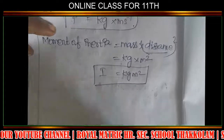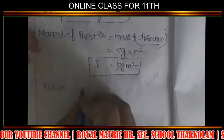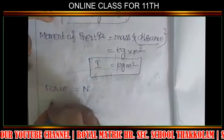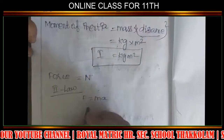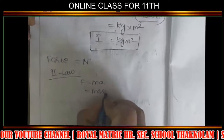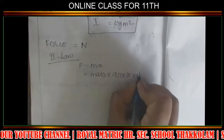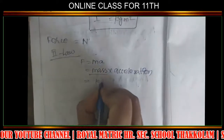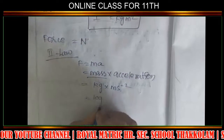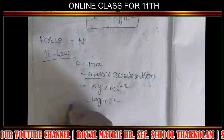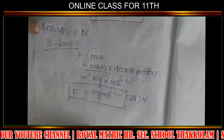Force SI unit is Newton. According to Newton's second law, F = m × a. Mass is in kilogram and acceleration is m s⁻², so force SI unit is kg m s⁻², which is called Newton because of Sir Isaac Newton.